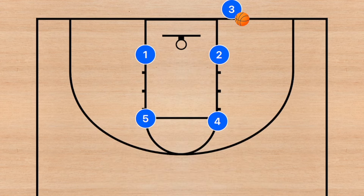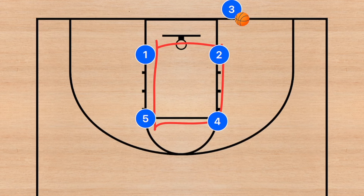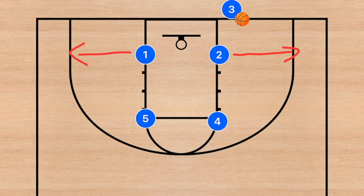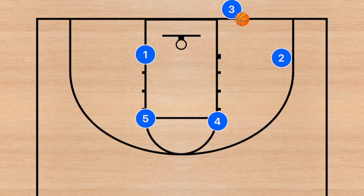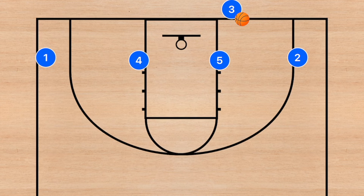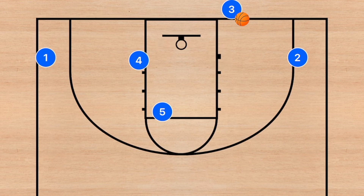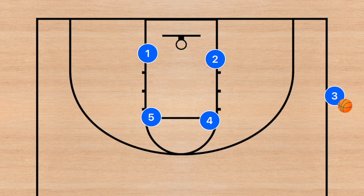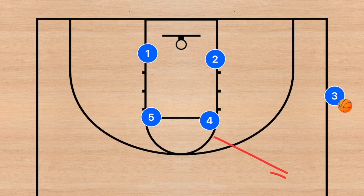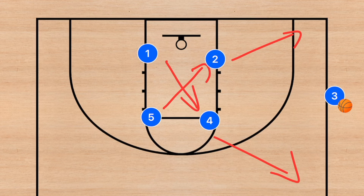This first play is a box inbounds and it can be used against either a zone or man-to-man — it works extremely well. What we are looking to do is have players two and one spread out, then player five cuts across and player four cuts across. You could call this 'box cross.' Players four and five will cross, and now player three has multiple options — he can pass to players two, five, four, or one.